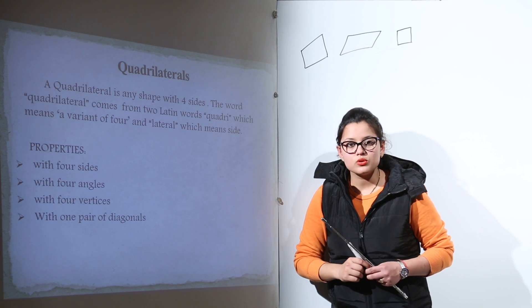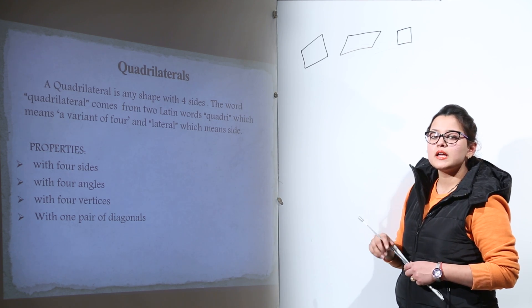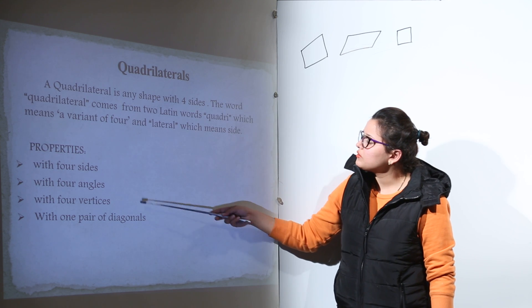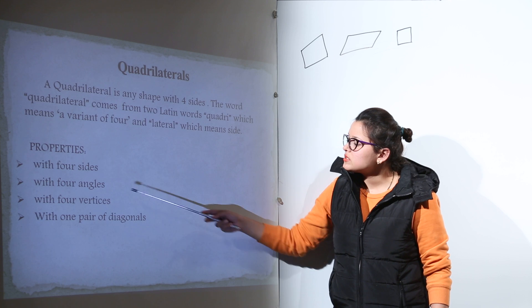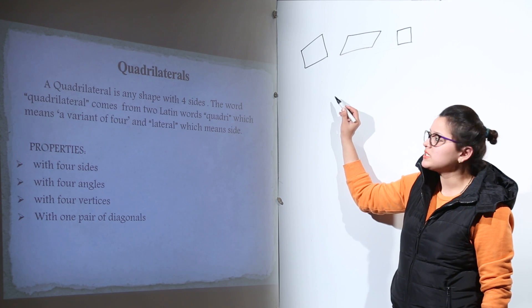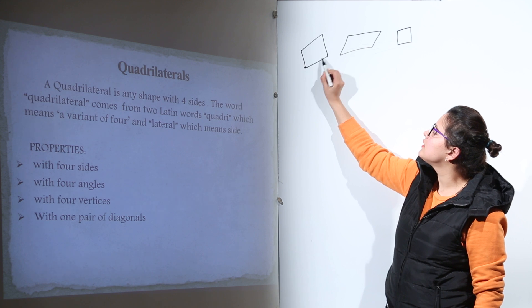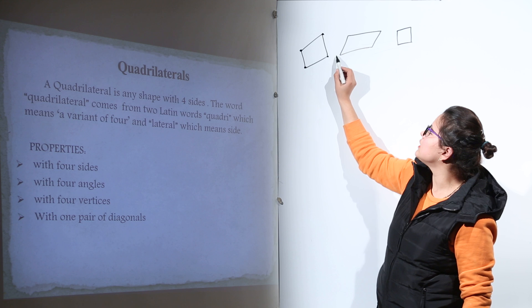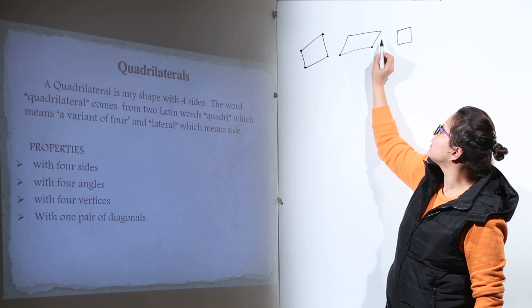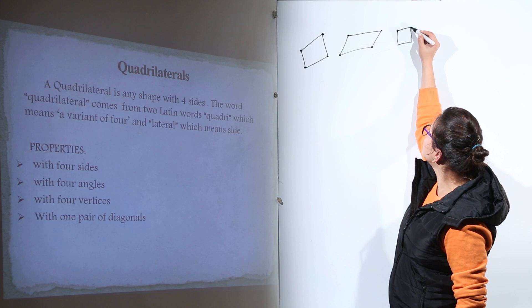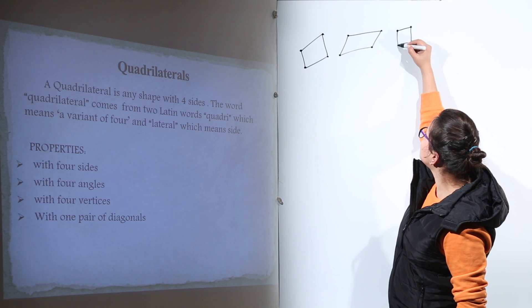It also has four angles. Any shape that has four sides and four angles is a quadrilateral. It also has four vertices. Vertices are the points at which sides meet. We have four such points where two sides are meeting in each case, no matter what kind of quadrilateral it is.